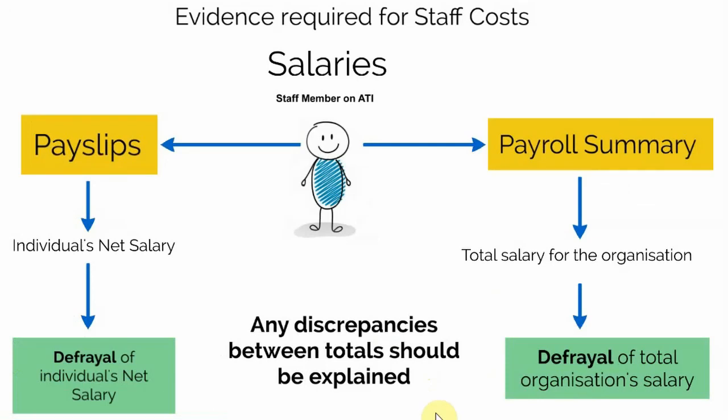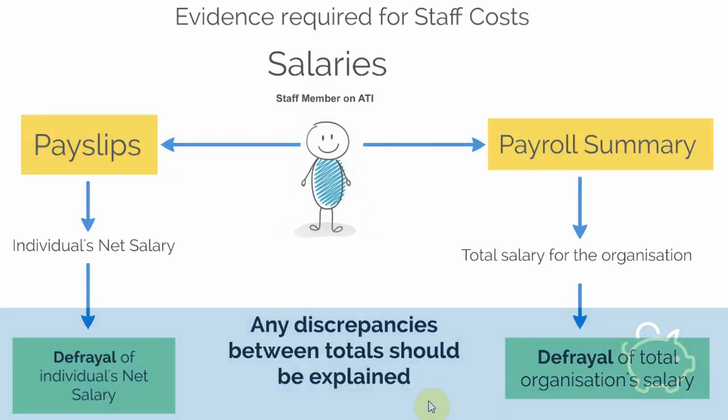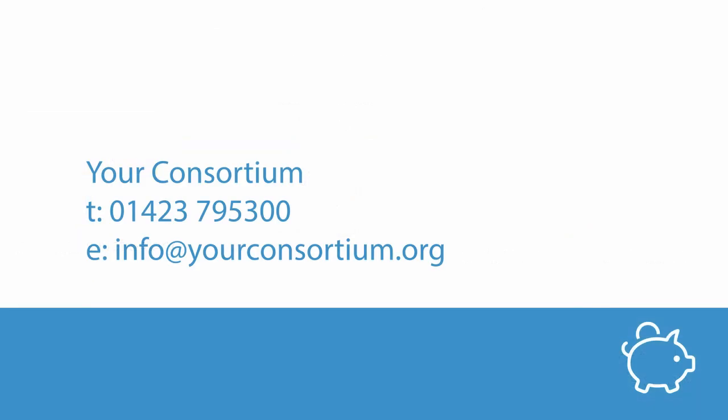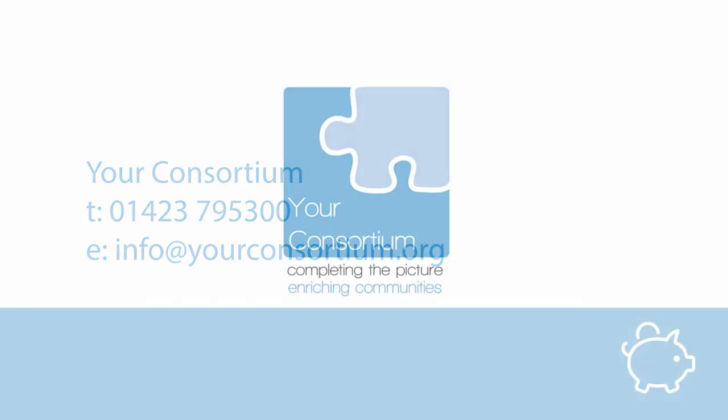As a final point, please note that if there are any discrepancies between the figures, an explanation will be required. For instance, if the total on the payroll summary doesn't match the total defrayal, we would need an explanation as to why that's the case. That completes the tutorial for salaries. You may now want to view the pensions and HMRC tutorial. If you would like further clarification on any of these topics, please contact us at your consortium. Thank you for watching.